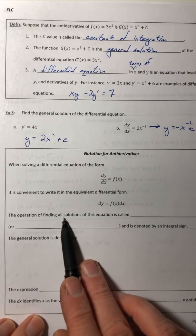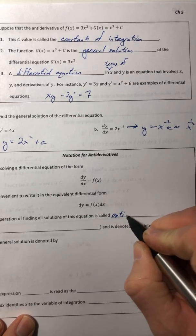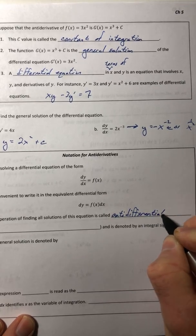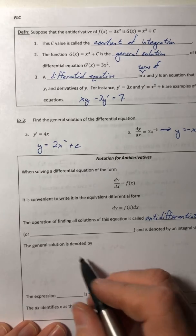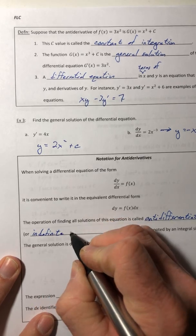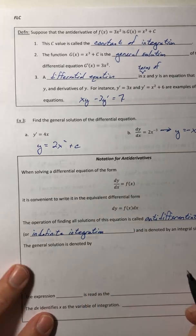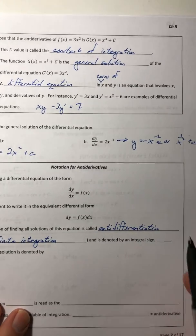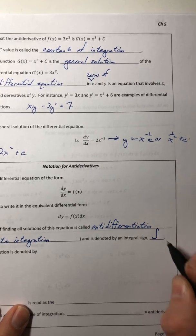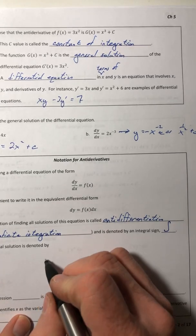So the operation of finding all solutions of this equation is called anti-differentiation, or indefinite integration. And is denoted by an integral sign. And the integral sign is that like tall, skinny, s-looking thing.